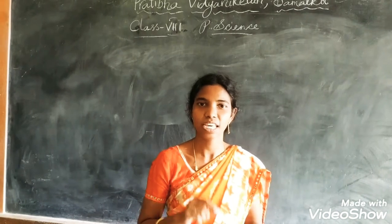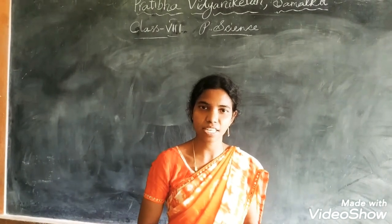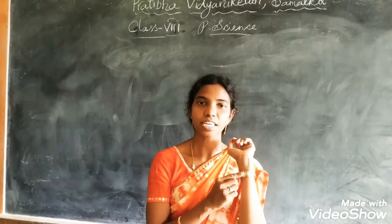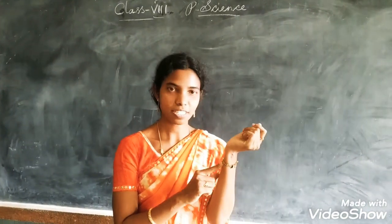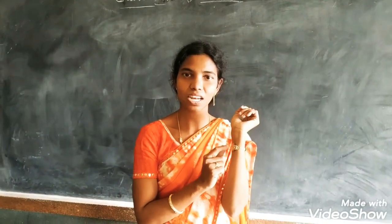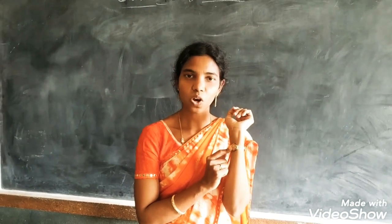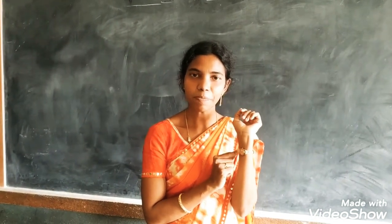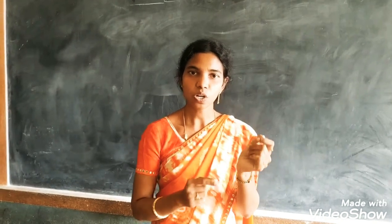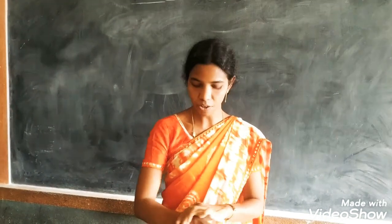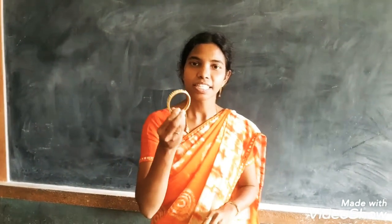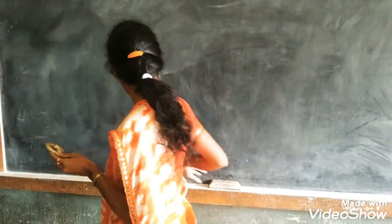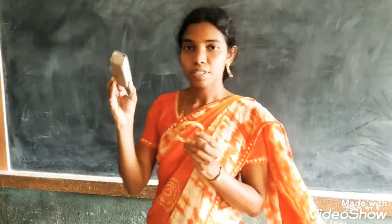There is variation in each and every material. For example, see this is a watch. What is the material of this? It is a metal. So this metal, while we are observing this, this metal is different from the other object.